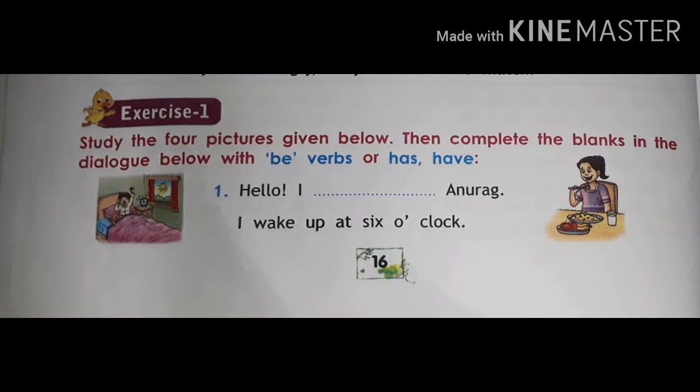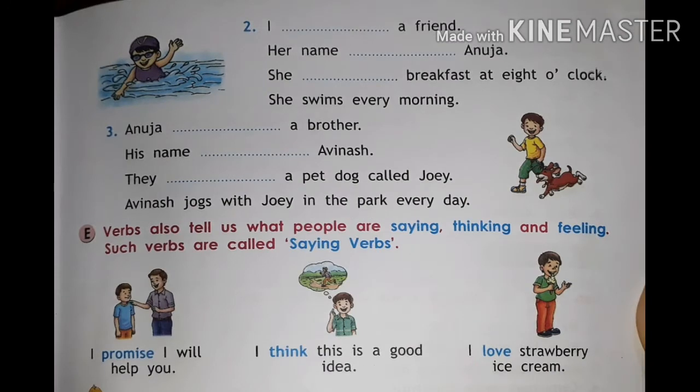First: 'Hello, I am on a rug, I wake up at 6 o'clock.' The right answer is 'I am' - so we put 'am' here. Second, there is a picture where one boy is swimming. 'I have a friend' - put 'have' here. Her name is Anuja. Third sentence: she has breakfast at 8 o'clock. She swims every morning.